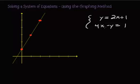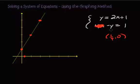Now let's look at the second line, 4x minus y equals 1, using the intercept method. Cover up y and solve for x — x equals one-fourth, so plot the point (1/4, 0). Then cover up x and solve for y — y equals negative 1, so plot (0, -1). Connect these two points to form the line. With the intercept method you only need two points — just double-check that they work.